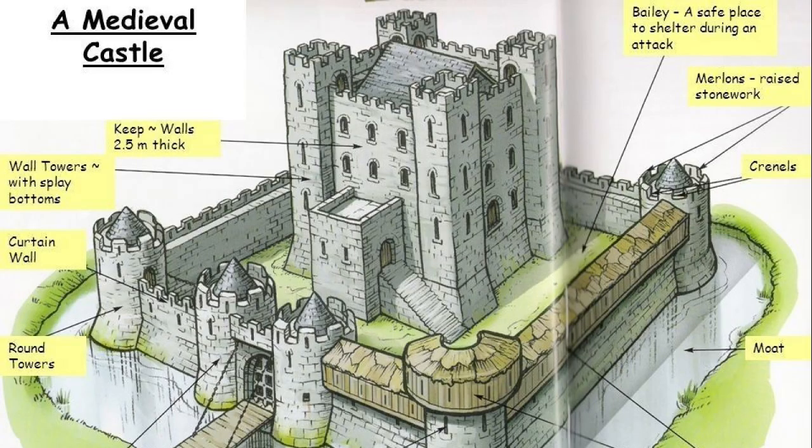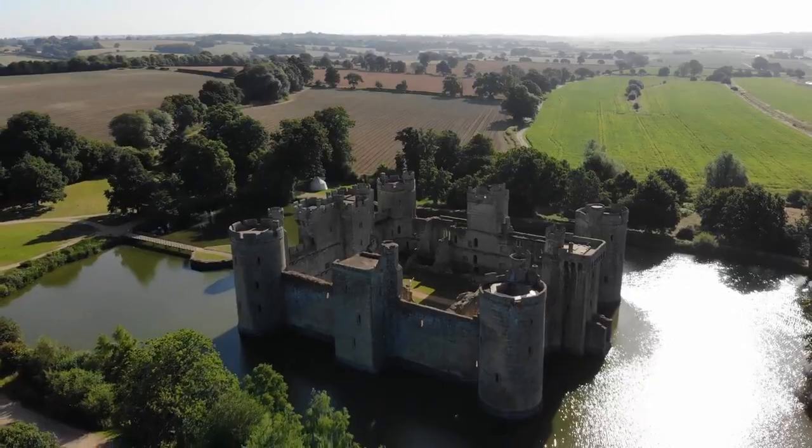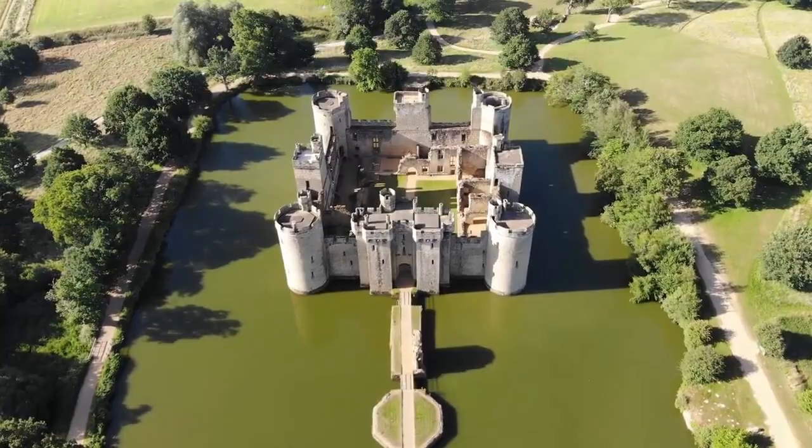4. Square Keep — a square plan castle that has circular towers on its corners.